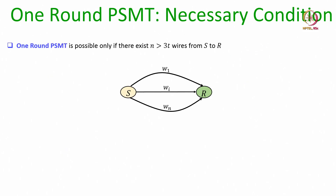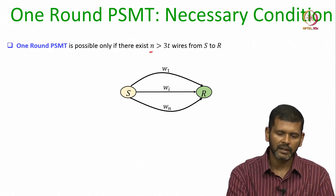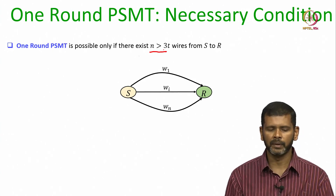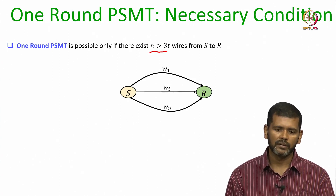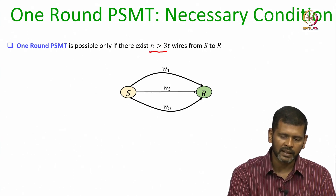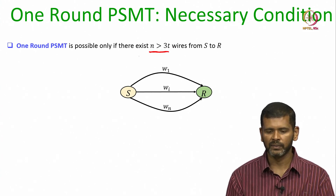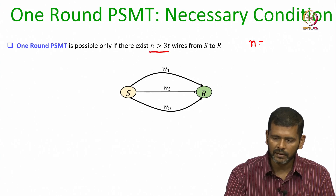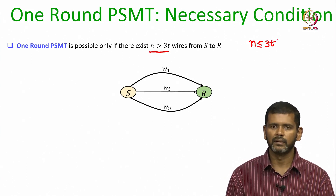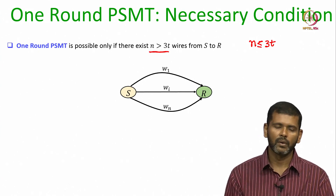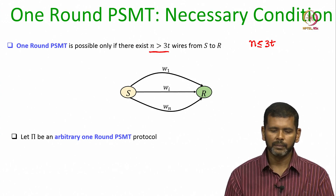Now let us first focus on one round PSMT. We can prove a very simple necessary condition for the existence of one round PSMT protocols: a one round PSMT protocol is possible to design only if there exist at least 3T plus 1 unidirectional wires from the sender to receiver. If there are 3T or fewer wires, then a one round PSMT protocol can never be possible. The proof will be through a contradiction.